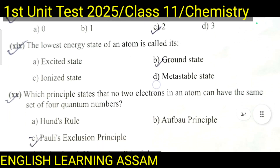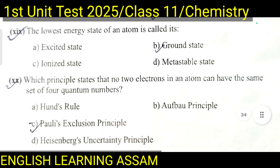Question number nineteen: The lowest energy state of an atom is called its — A. excited state, B. ground state, C. ionized state, D. metastable state. The correct option is B — ground state.